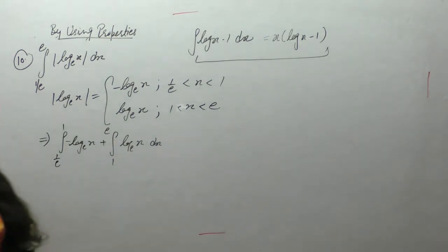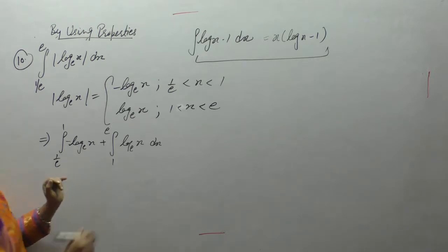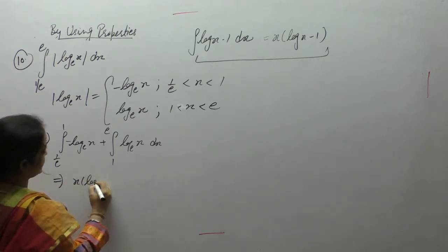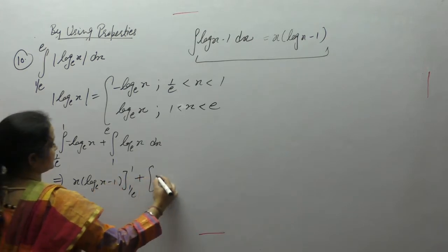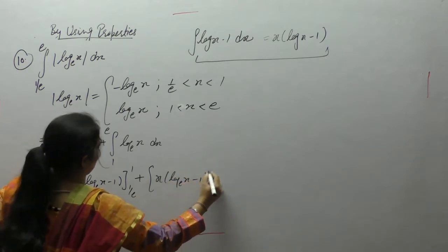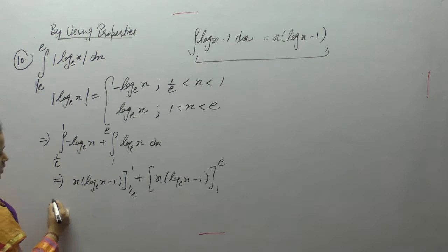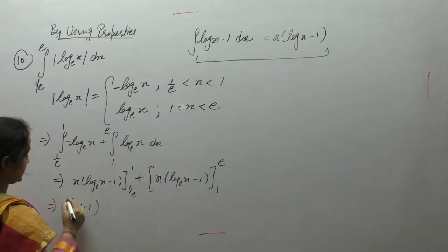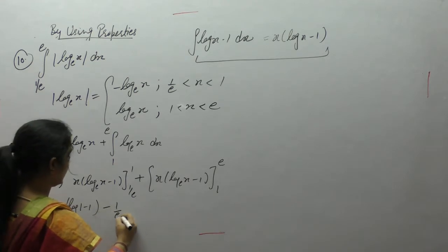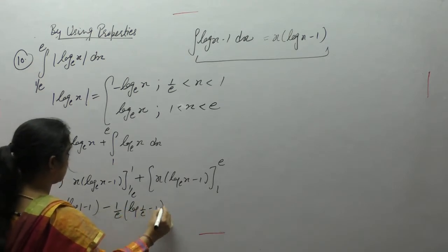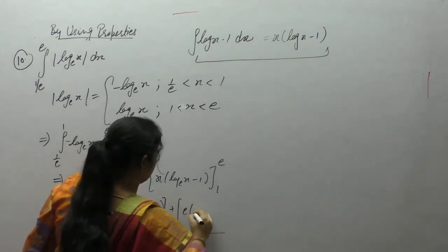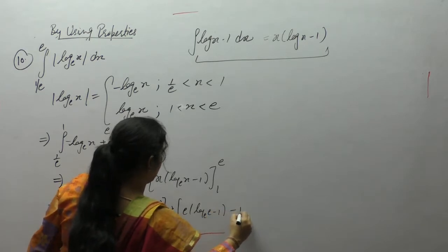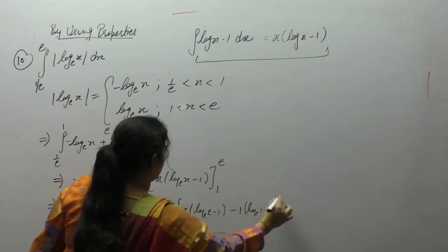Integral of log x times 1 is x log x minus 1. So we put the direct value here: x log x minus 1 plus x log x minus 1. Put the limits now: 1 log 1 minus 1 minus 1/e plus e log e minus 1 minus 1 log 1 minus 1.